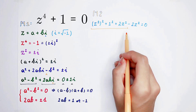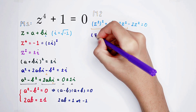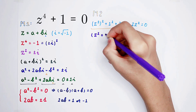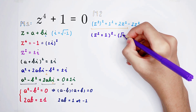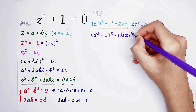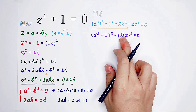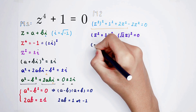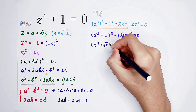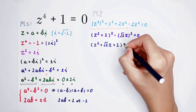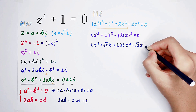This section is a perfect square: z squared plus 1, all squared. Then minus 2 times z squared, which can be written as square root of 2 times z, all squared. Using the difference of squares — x squared minus y squared equals x plus y times x minus y — we get: z squared plus square root of 2 times z plus 1, times z squared minus square root of 2 times z plus 1.